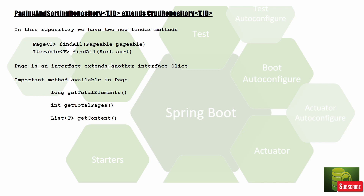getContent — when you call findAll with a Pageable, you get a Page response, and from that you call getContent to get a list of domain objects of whatever data type you're handling. For findAll with Sort, it sorts by whatever attributes you provide — one or multiple — and returns the sorted response. A bonus feature of Pageable is that you can do sorting along with paging.